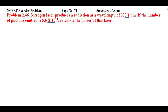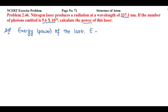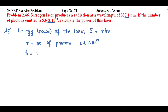For energy we'll use the relation E — energy or power of the laser — denoted by capital E and represented as E = nhν. Here n is the number of photons, with value 5.6 into 10 raised to power 24. h is Planck's constant.